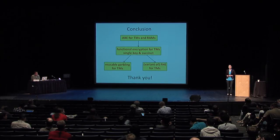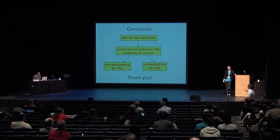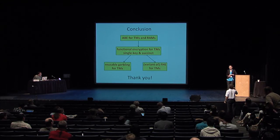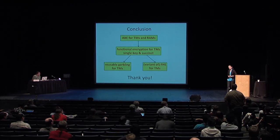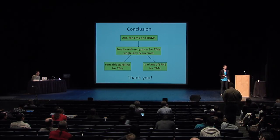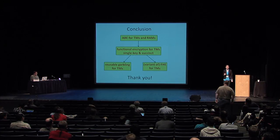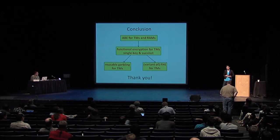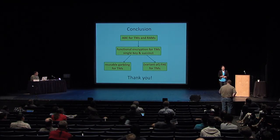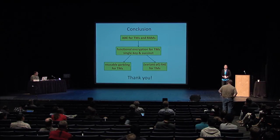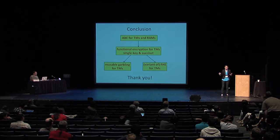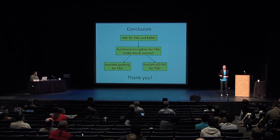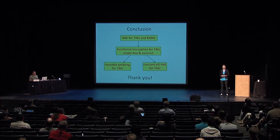Are there any questions? First question: your scheme is single-query secure — can we use ideas from recent work to boost security to Q queries? No, because that approach uses randomized encodings and it's not clear how to do that for Turing machines, so it remains single key and not bounded collusion. Second question: what prevents you from running on a Turing machine with worst-case running time worse than polynomial? The SNARKs are for NP, so you need to be able to write down an NP language, which means you need polynomial-time checking — there must exist a polynomial bounding the checking time for all members of that family.